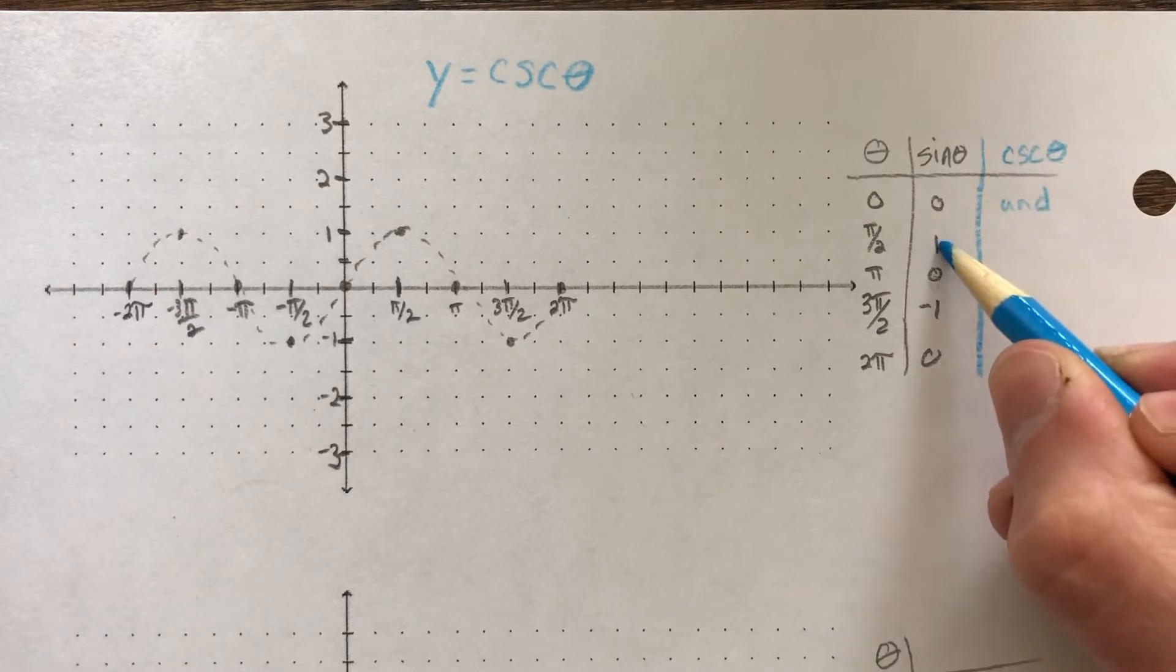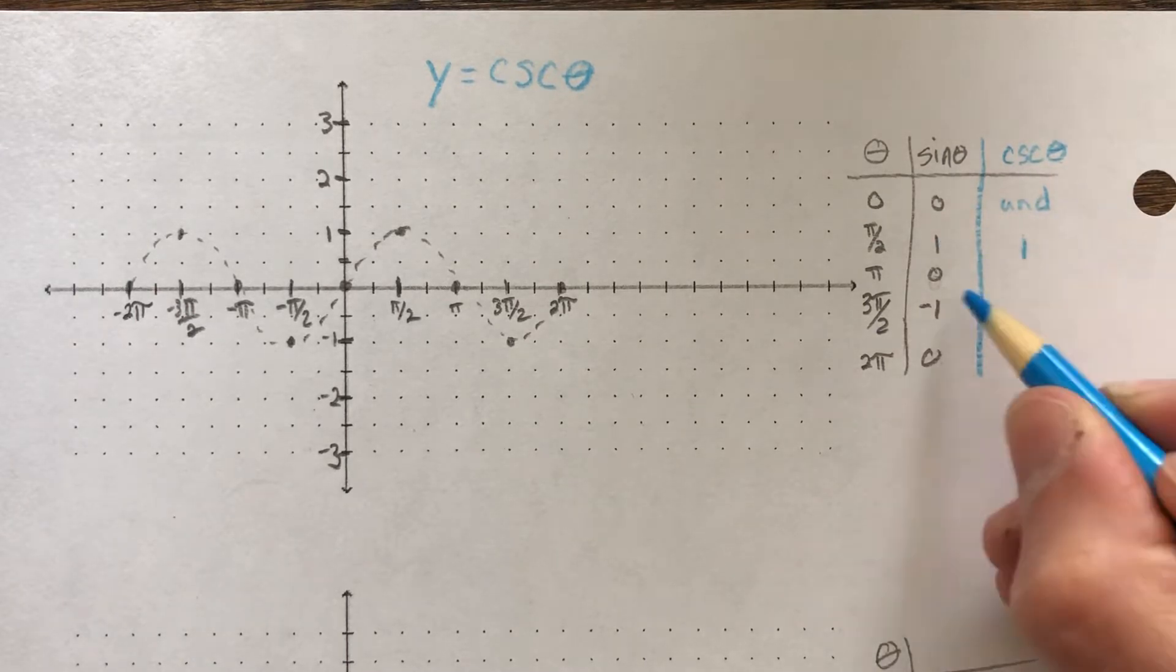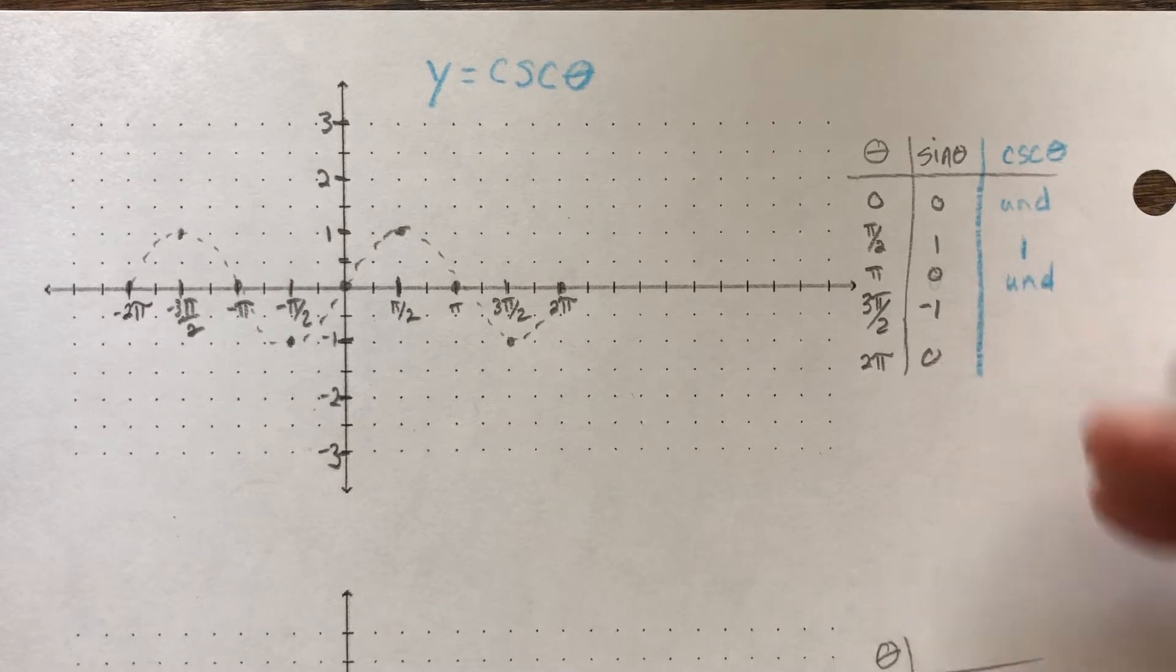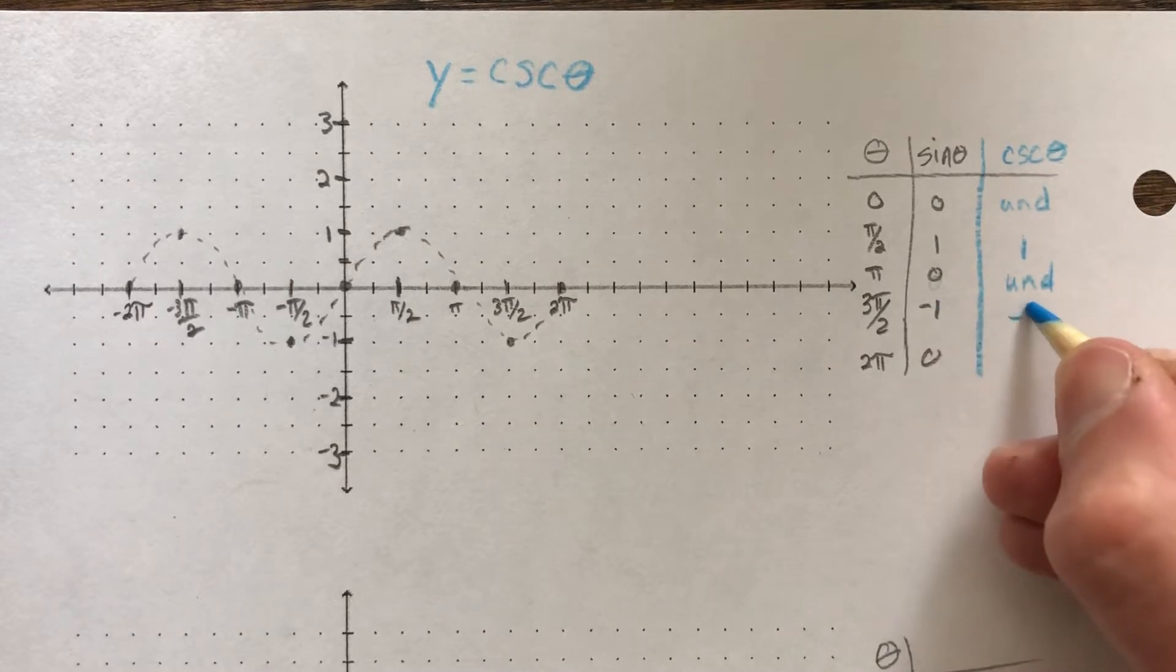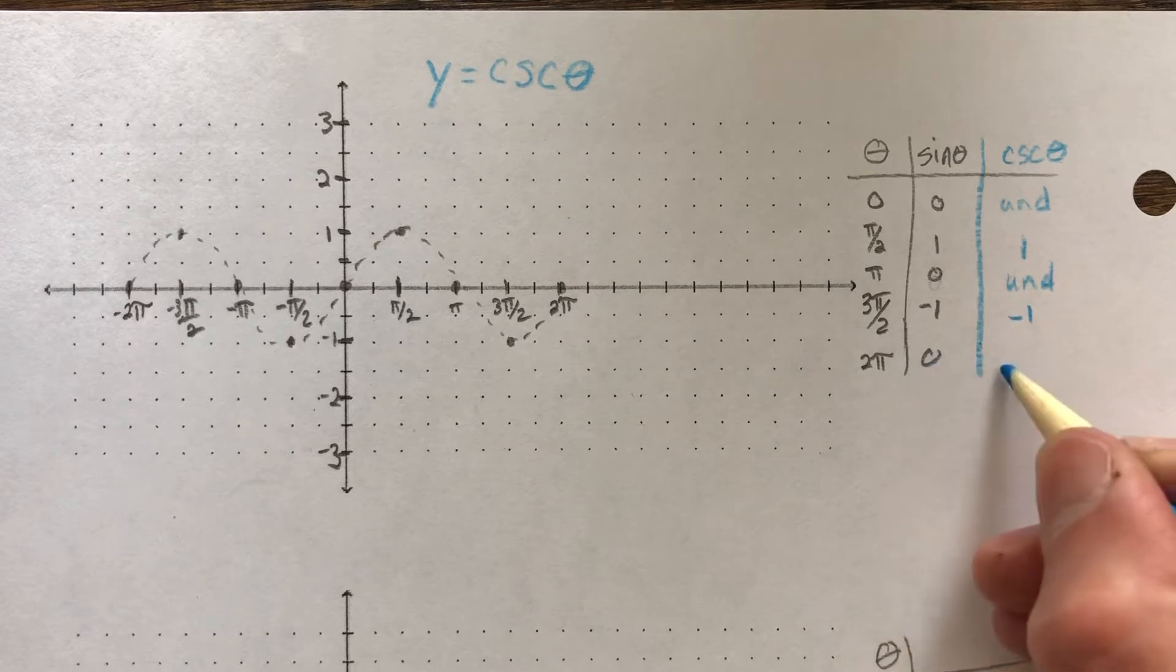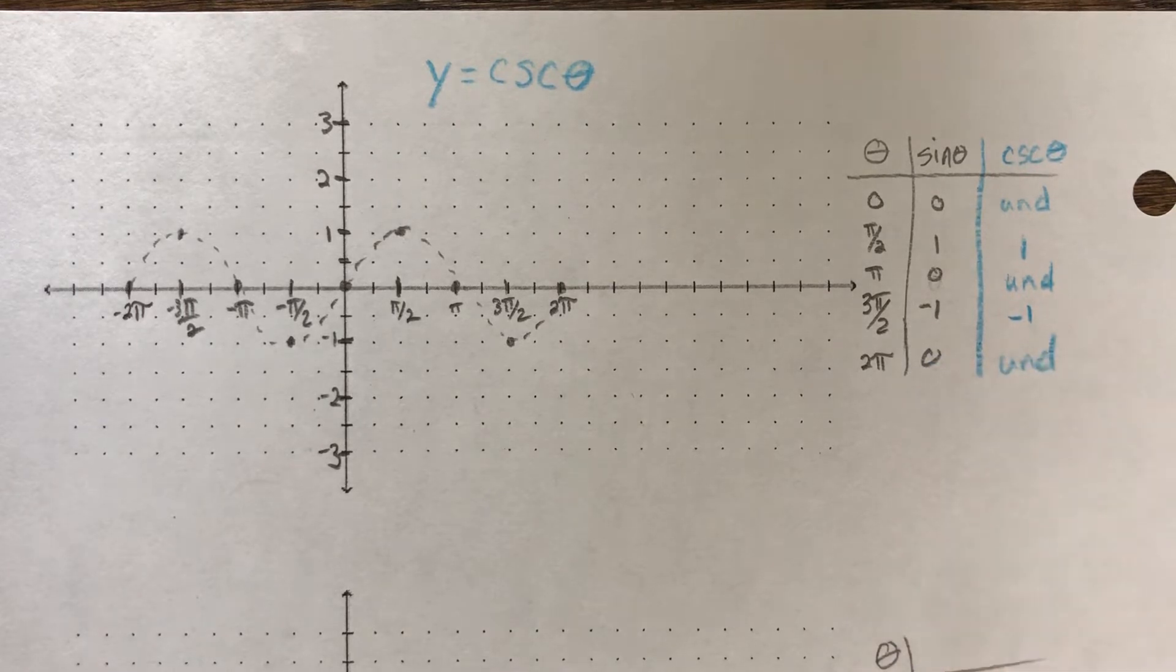What's the reciprocal of 1? Well, that's just 1. Reciprocal of 0 is undefined. Reciprocal of negative 1 is negative 1. Reciprocal of 0 is undefined.